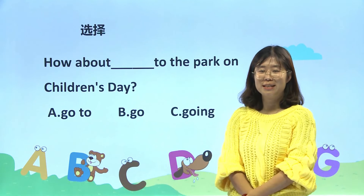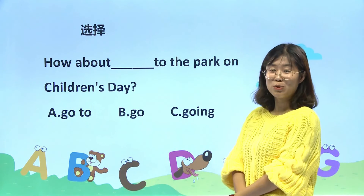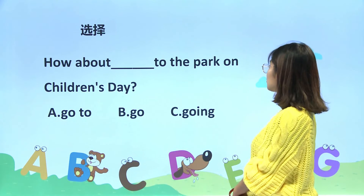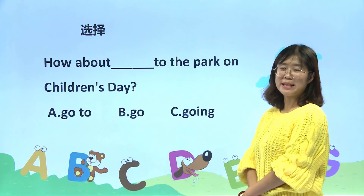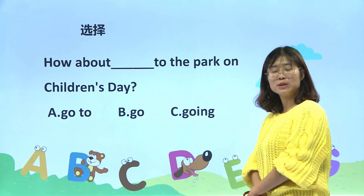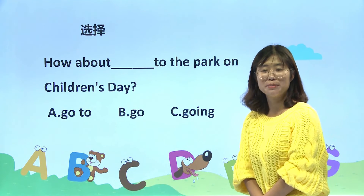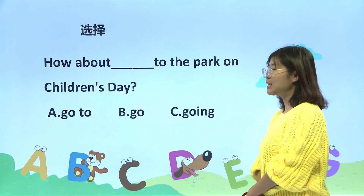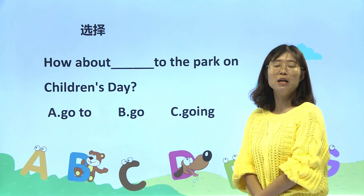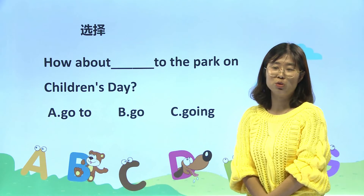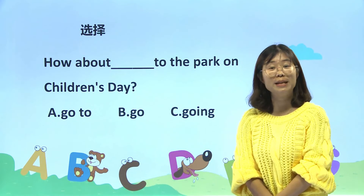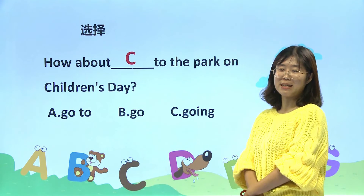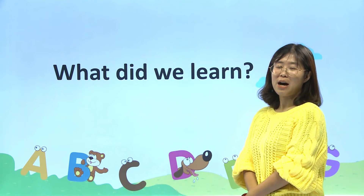好，同学们，现在跟老师一起看一下这些选择题。第一个：How about ___ to the park on Children's Day? 在儿童节去公园怎么样呢？我们说how about后边加动词的时候是动名词，动名词就是在动词原型后边加ing，我们可以选择C选项。